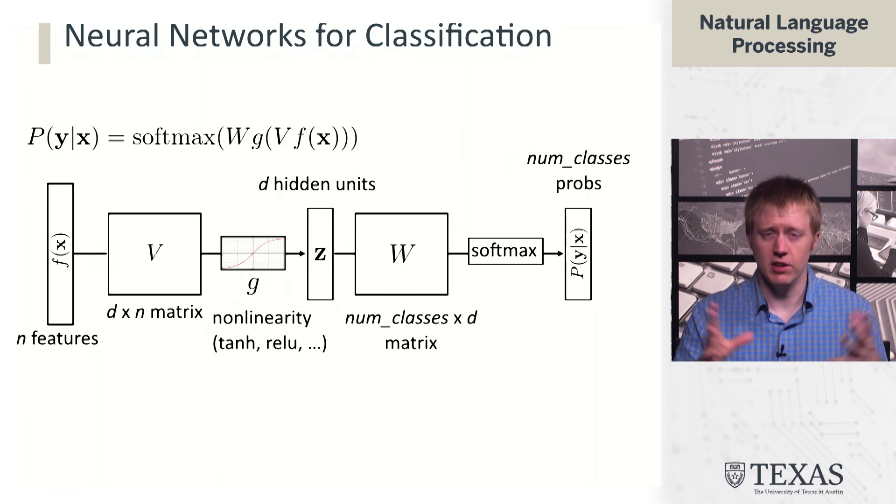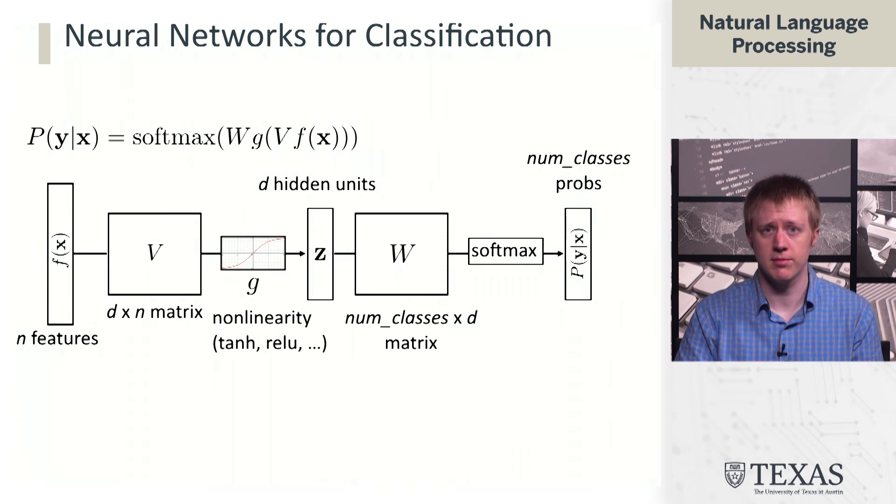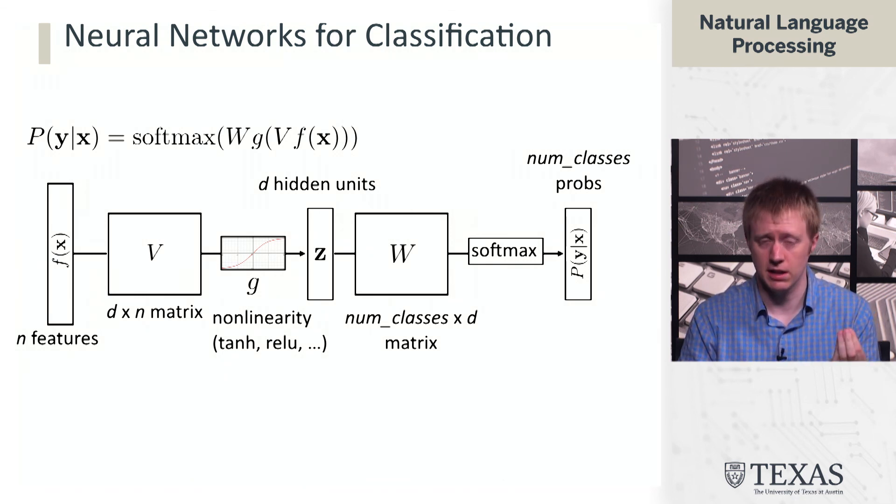This is a gory detail graphical unpacking of what's going on in this formula. Now we understand how to do this computation. If we have all these parameters, we can compute this using relatively basic matrix math. But the real question is how to train these things. We need to think about how stochastic gradient descent generalizes to this case.